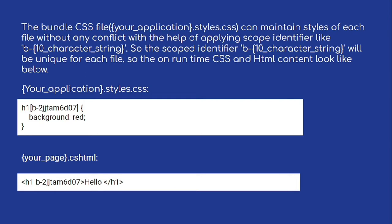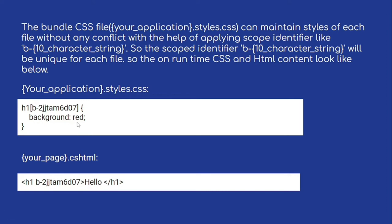At runtime, the CSS and HTML content will look like this sample. Once the application is rendered and an isolated CSS file is created for a page or view, the HTML is rendered with a unique attribute. For example, for an h1 tag with background color red, an additional identifier like `b-[random 10 character string]` is added automatically to both the CSS and the HTML.